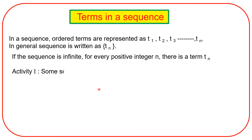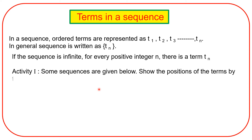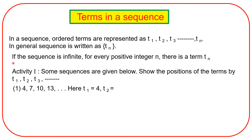Activity: some sequences are given below. Show the position of the terms by T1, T2, T3, etc. First sequence: 4, 7, 10, 13, and so on. Here, T1 = 4, T2 = 7, T3 = 10, T4 = 13, and so on.